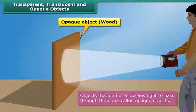When light falls on an opaque object, its shadow is formed on the other side of it.